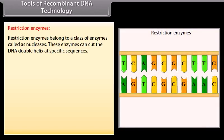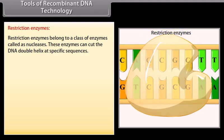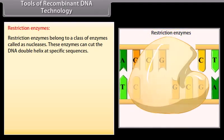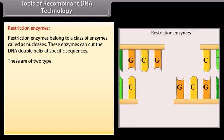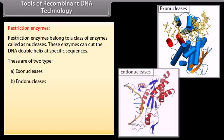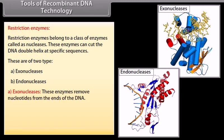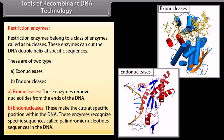Tools of recombinant DNA technology. Restriction enzymes belong to a class of enzymes called nucleases. These enzymes can cut the DNA double helix at specific sequences. There are two types: exonucleases, which remove nucleotides from the ends of the DNA; and endonucleases, which make cuts at specific positions within the DNA. Endonucleases recognize specific sequences called palindromic nucleotide sequences in the DNA.